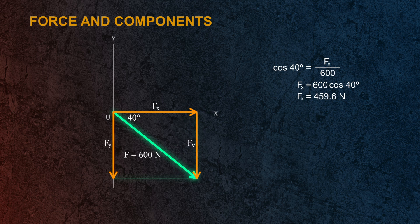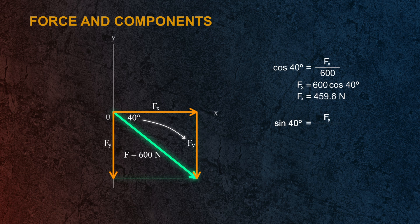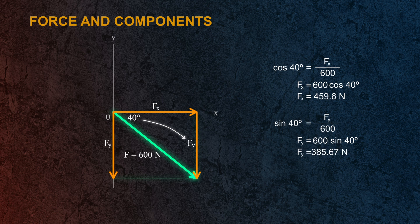Now for the y component, it lies along the side opposite to the given angle. And the ratio of the opposite side to the hypotenuse is sine of theta. So this time, we'll use sine to find the y component. That will be sin 40° equals Fy divided by the hypotenuse F which is equal to 600 newtons. So Fy is equal to 600 newtons times sine of 40 degrees. Solving for Fy, that will give us 385.67 newtons.